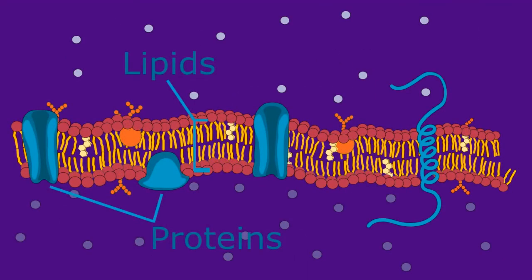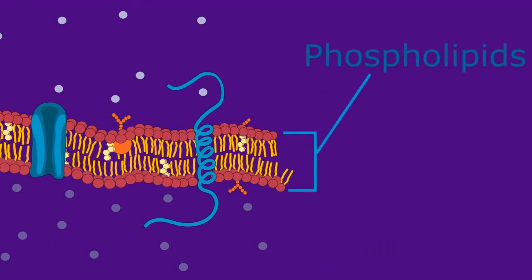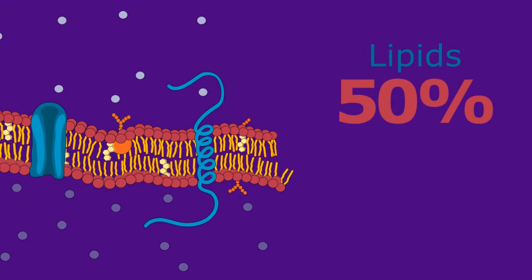The cell membrane is mainly composed of lipids and proteins. Its framework consists of a double layer of phospholipids. Lipids make up 50% of most membranes, although depending on the location, they may make up up to 80%. The remainder is made from proteins.